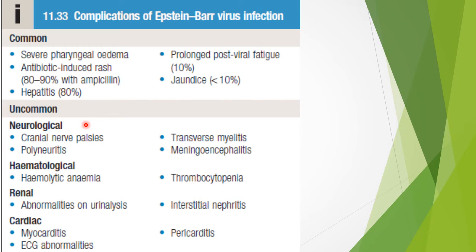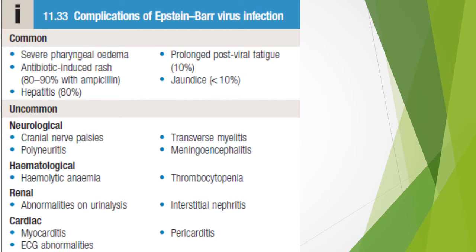Neurological complications include cranial nerve palsies, polyneuritis, transverse myelitis, and meningoencephalitis. Hematological complications include hemolytic anemia and thrombocytopenia. Renal complications include abnormalities on urinalysis and interstitial nephritis. Cardiac complications include myocarditis, ECG abnormalities, and pericarditis.